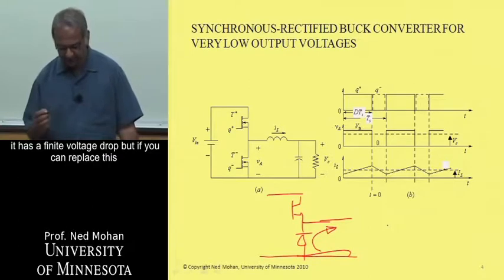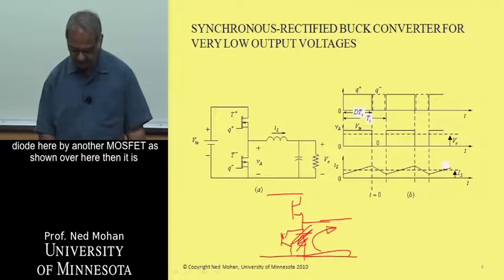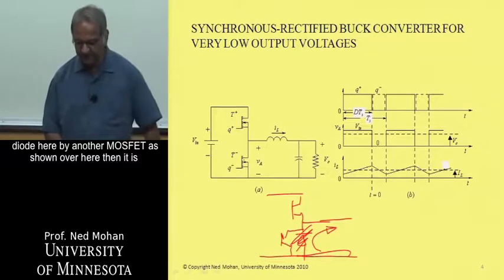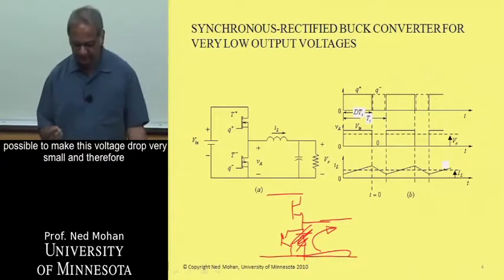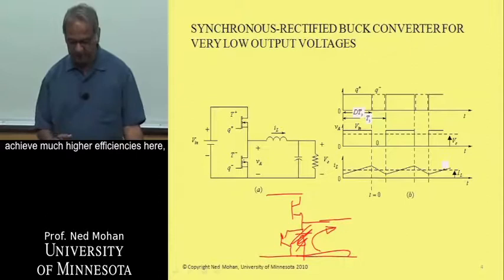But if we can replace this diode here by another MOSFET, as shown over here, then it is possible to make this voltage drop very small and therefore achieve much higher efficiencies here.